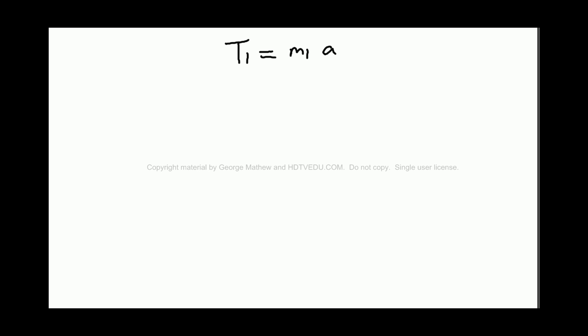And then we have T2 minus T1 equals M2a. This is in the absence of friction. T2 minus T1 equals M2a for the second mass. So we now know what A is and T1. So you have T2 minus M1a equals M2a. So what is T2? M1a plus M2a.